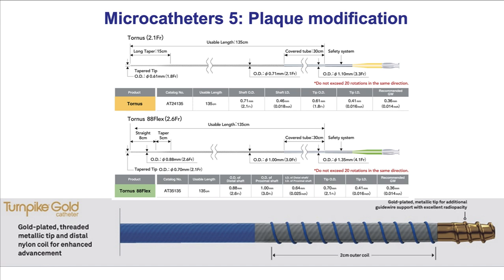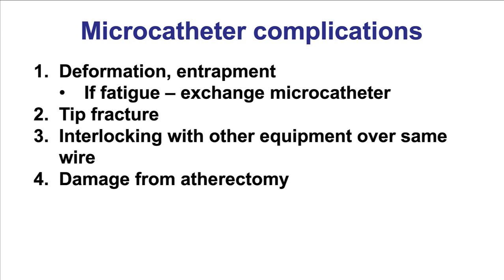Category five — the plaque modification microcatheters. Two are available. The Tornus comes in 2.1 and 2.6 French and should be advanced counter-clockwise and withdrawn clockwise. The Turnpike Gold is advanced turning clockwise and withdrawn turning counter-clockwise. Their most common use is for balloon-uncrossable lesions — to modify the plaque enough to allow balloons to cross.